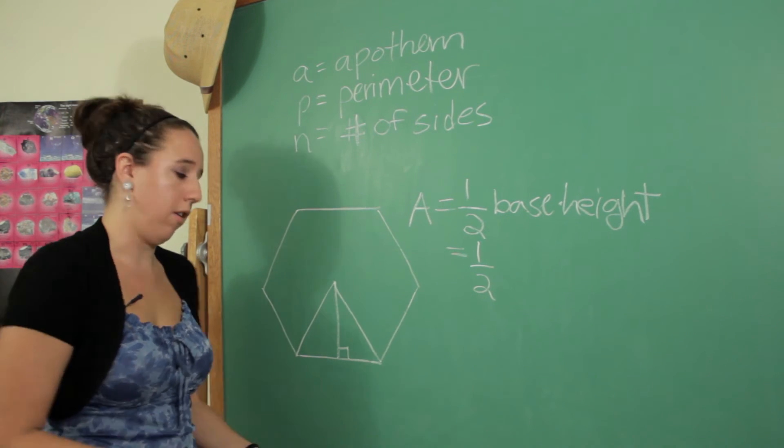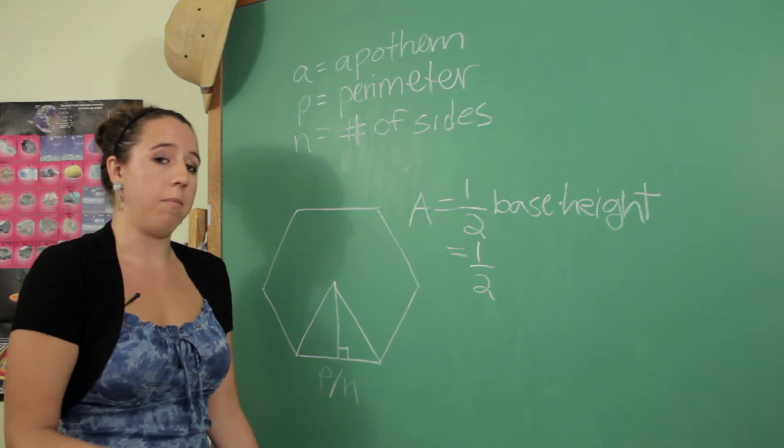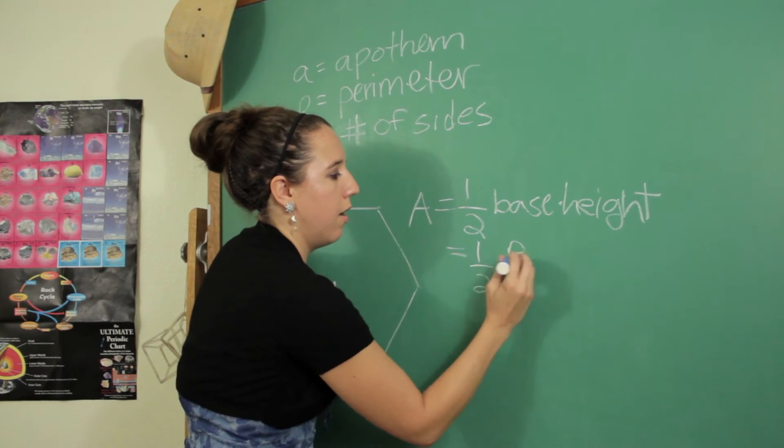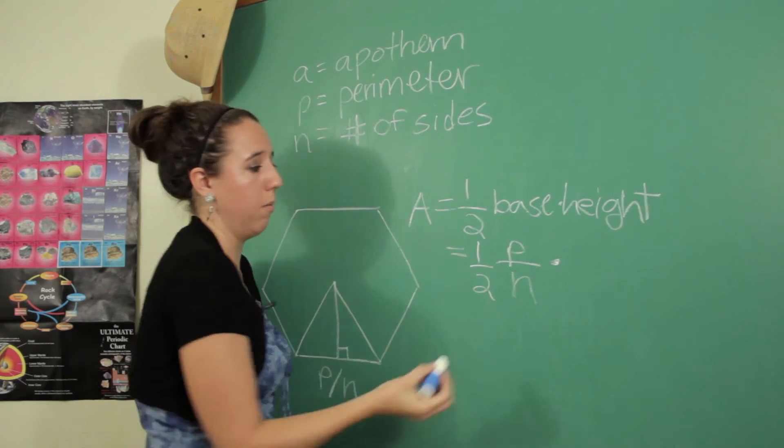So one of the sides or the base of the triangle is P over n. And the height is just the apothem again we're given that.